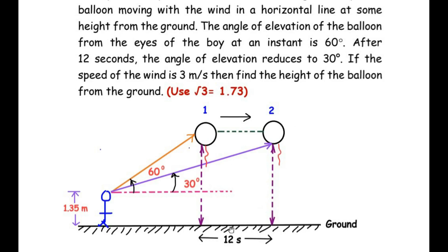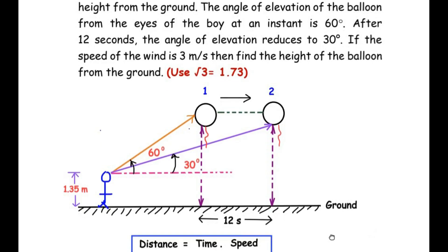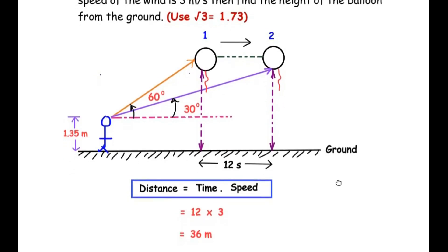Before proceeding, let us convert 12 seconds into meters, since we need to find height in meters. The speed of wind is given as 3 meters per second. Using the formula distance = speed × time: distance = 12 × 3 = 36 meters. So the balloon travels 36 meters horizontally in 12 seconds. We now replace the 12 seconds with 36 meters.